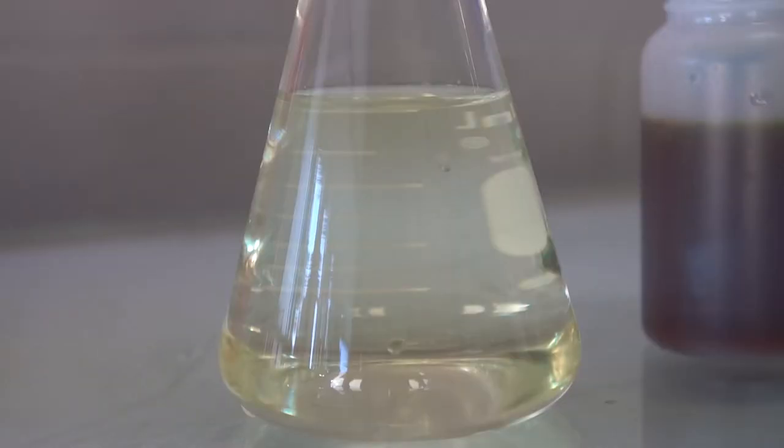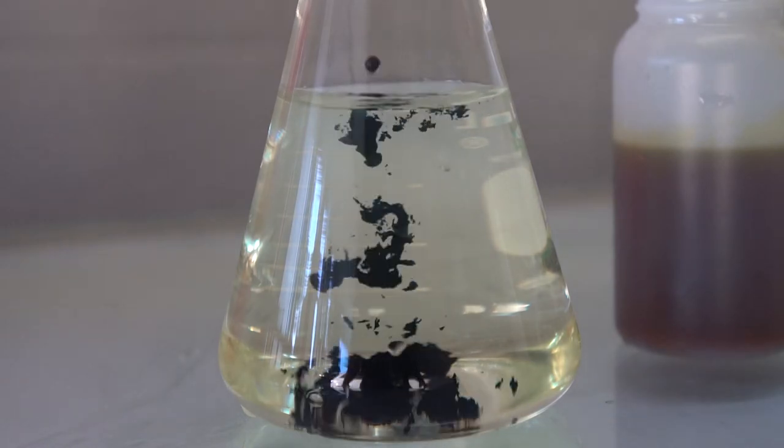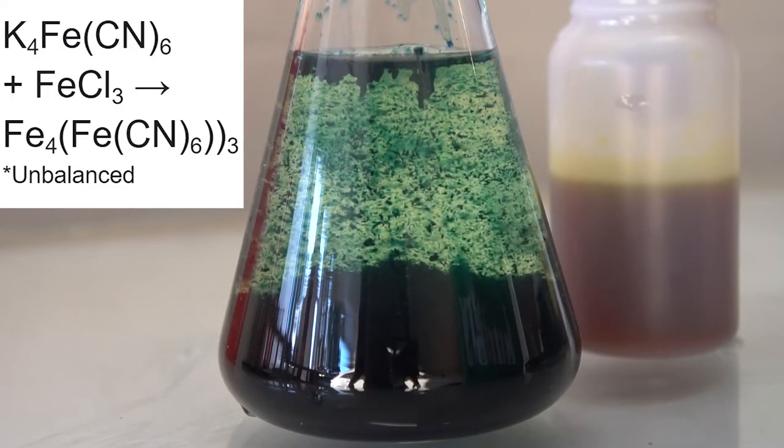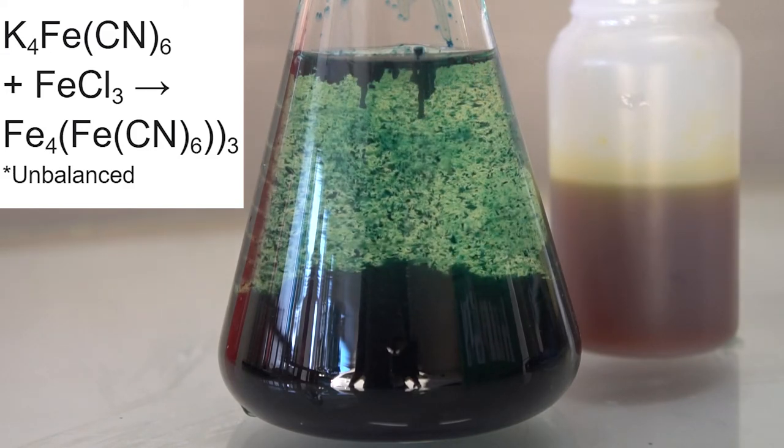You see it's a nice reddish-brown rust color. We add in a few drops - whoa, look at that blue! That's really cool. Dark blue ferric ferrocyanide precipitates out.